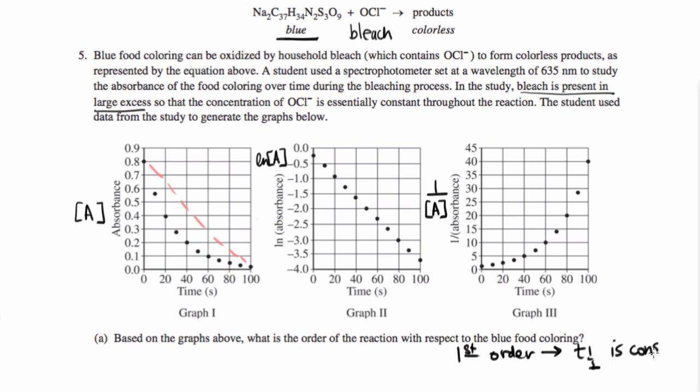So that means that the time it takes for the concentration to go down to half of what it was is the same no matter what your initial concentration is, no matter what point in your reaction you're at. So that's something we can actually investigate just by looking at this first graph. We can see how much time it takes to get to half the concentration, and see if that's something that changes over time.